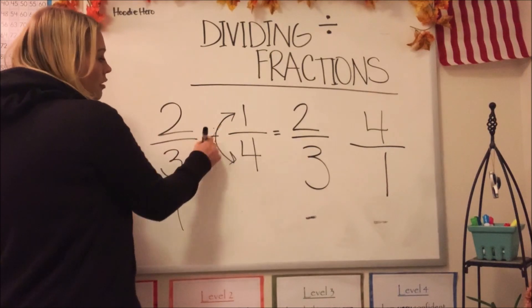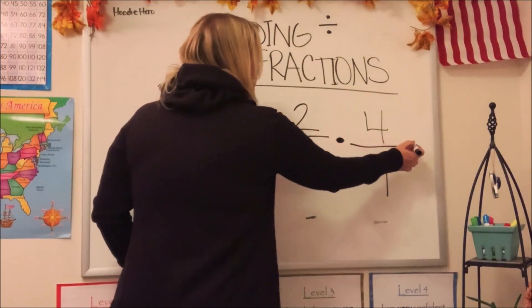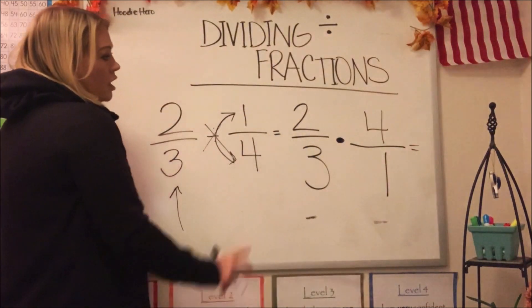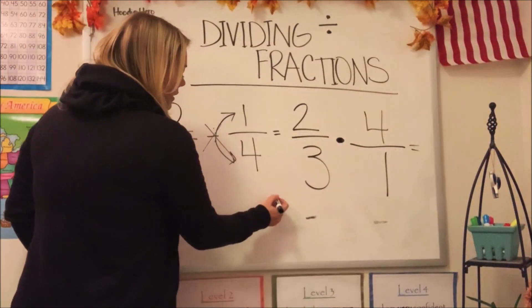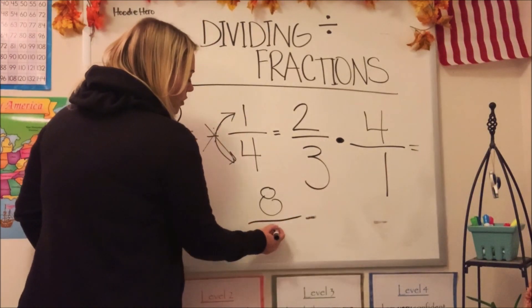Now, are we dividing anymore? We're not. We are multiplying. So let's multiply straight across, guys. Two times four is eight and three times one is three.